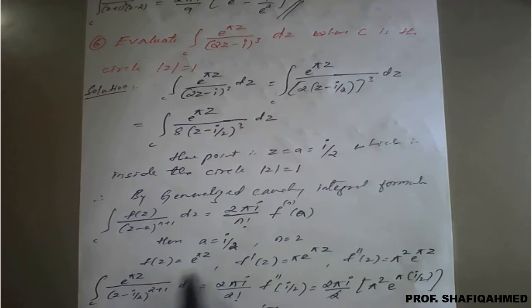The value of n will be 2. On simplification, n is 2 means two dashes will come. Two dashes stand for double differentiation.